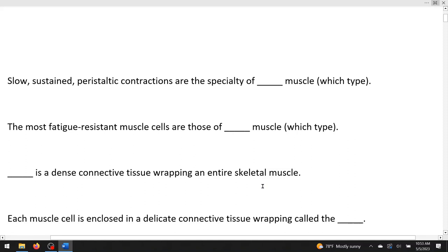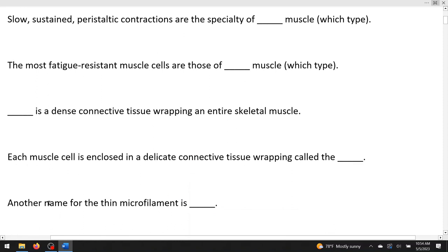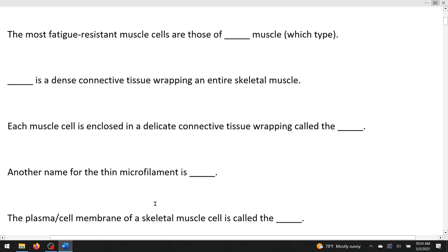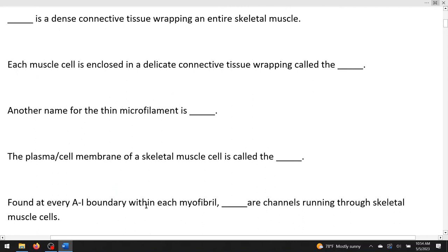Blank is a dense connective tissue wrapping an entire skeletal muscle. Well, if we're going around the entire muscle, we want the one on the very most outside, and that would be the epimysium. Each muscle cell is enclosed in a delicate connective tissue wrapping called the blank. Now, this is the one we're looking for the smallest of those wrappings, and that's going to be endomysium. Another name for the thin filament or thin microfilament is called actin. Myosin is the thick one. The plasma slash cell membrane of a skeletal muscle cell is called the, you could say sarcolemma. That'd be perfect. Found at every AI boundary within each myofibril blank are channels running through skeletal muscle cells. So at every AI junction you have a T-tube running down, also known as a transverse tubule.